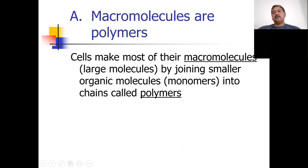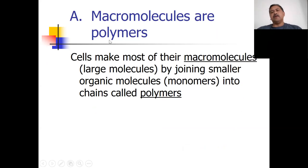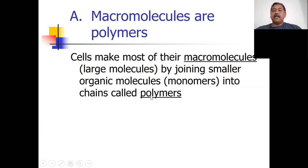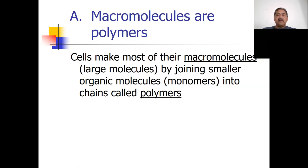Cells make most of their macromolecules by joining smaller organic molecules into chains called polymers. These smaller organic molecules are called monomers — 'mono' means one, so a monomer is one building block. To make a macromolecule, you put a bunch of monomers together to make a polymer. It's like building a brick house — the contractor's joke is, how do you build a brick house? One brick at a time. That's the same concept as a polymer — you build it one monomer at a time.